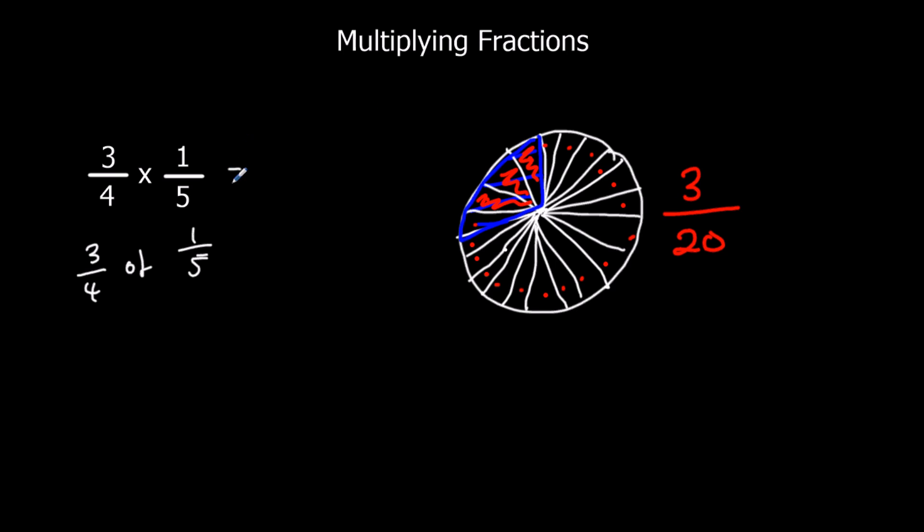The quick way of doing this is just to say times the top, times the bottom. So three times one is three, four times five is 20. So multiplying fractions, times the top, times the top, times the bottom. And that's all you really need to remember.